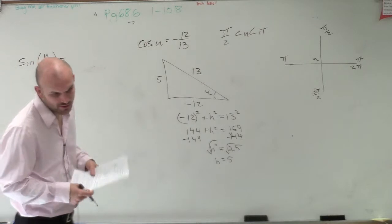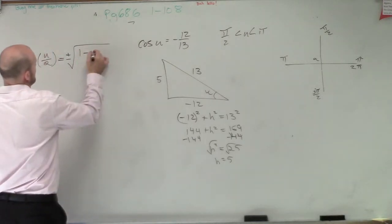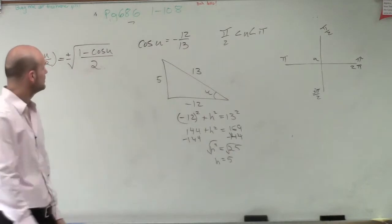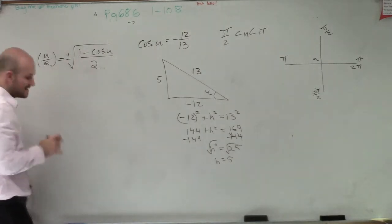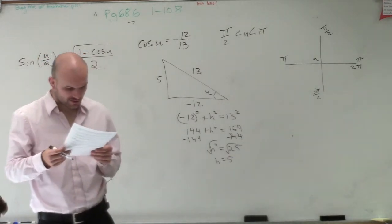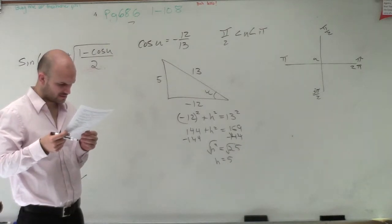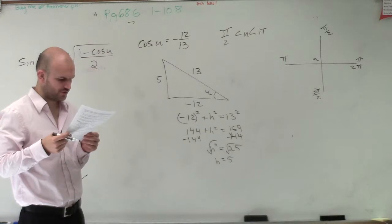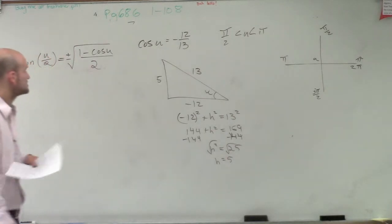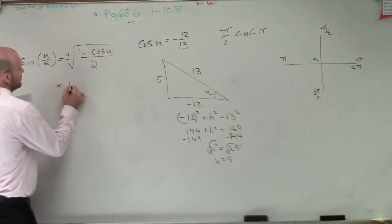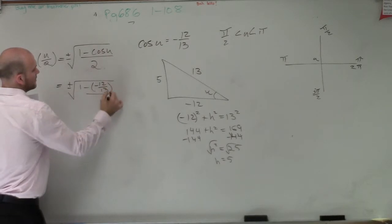So now we have sine of u divided by 2, which equals plus or minus √[(1 - cosine of u) / 2]. So actually, in this case, we actually really didn't even need to find that opposite side. Because all they're asking us in this problem is just to find the sine of u divided by 2. Sine of u divided by 2 is just 1 minus cosine of u. Well, cosine of u is negative 12 over 13. So I have plus or minus the square root of 1 minus a negative 12 over 13 divided by 2.